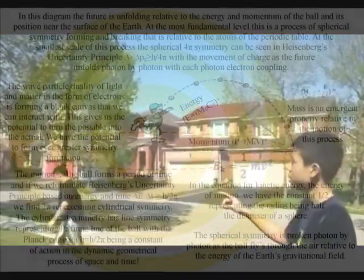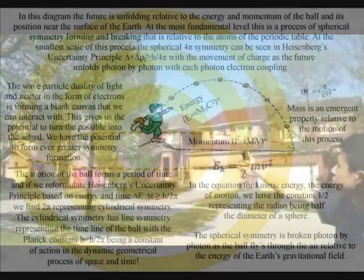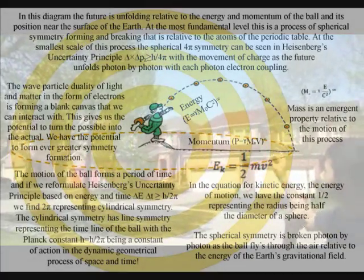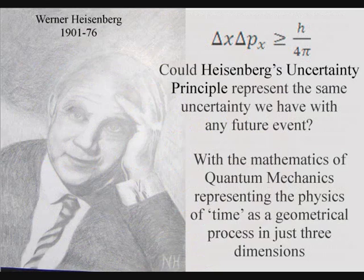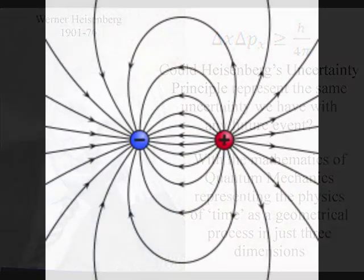At the smallest scale of this process the spherical symmetry can be seen as Heisenberg's uncertainty principle with the movement of charge as the future unfolds photon by photon.